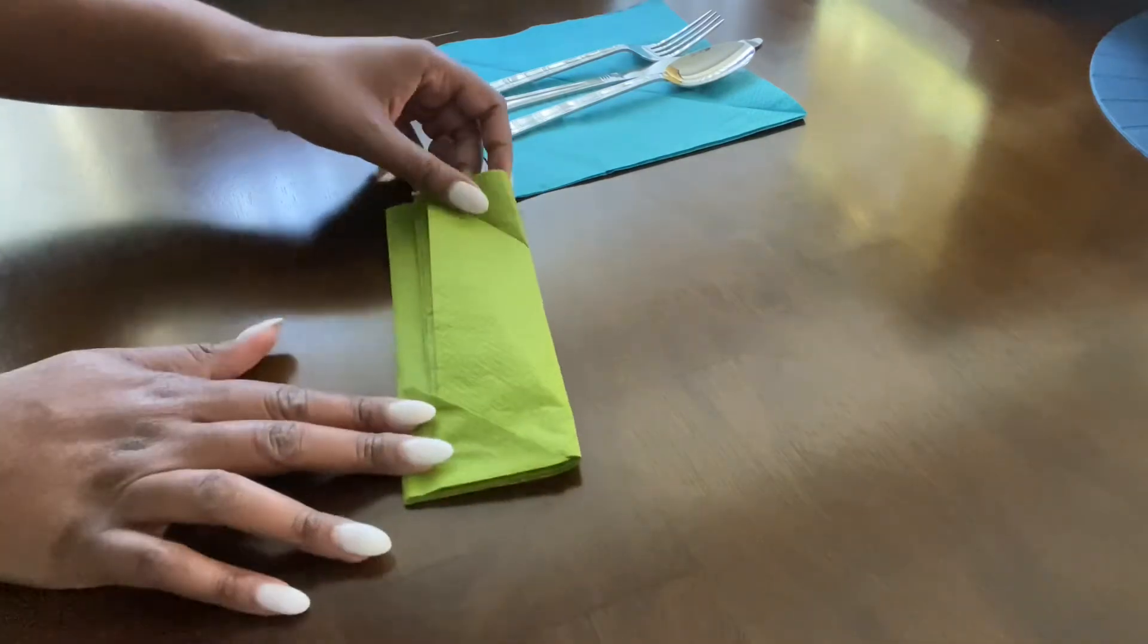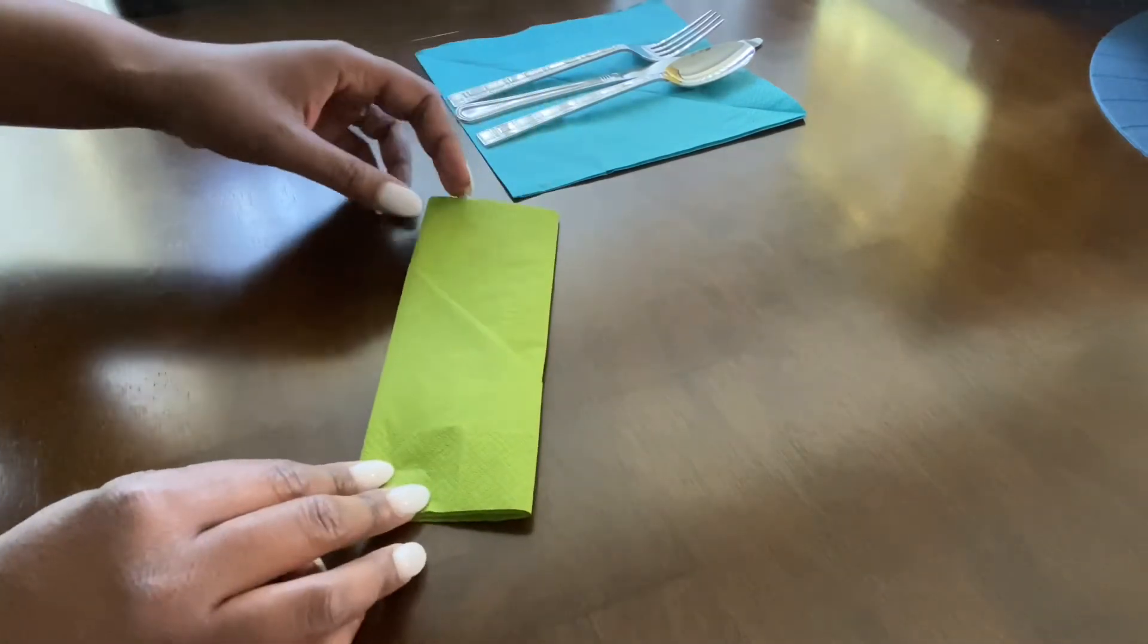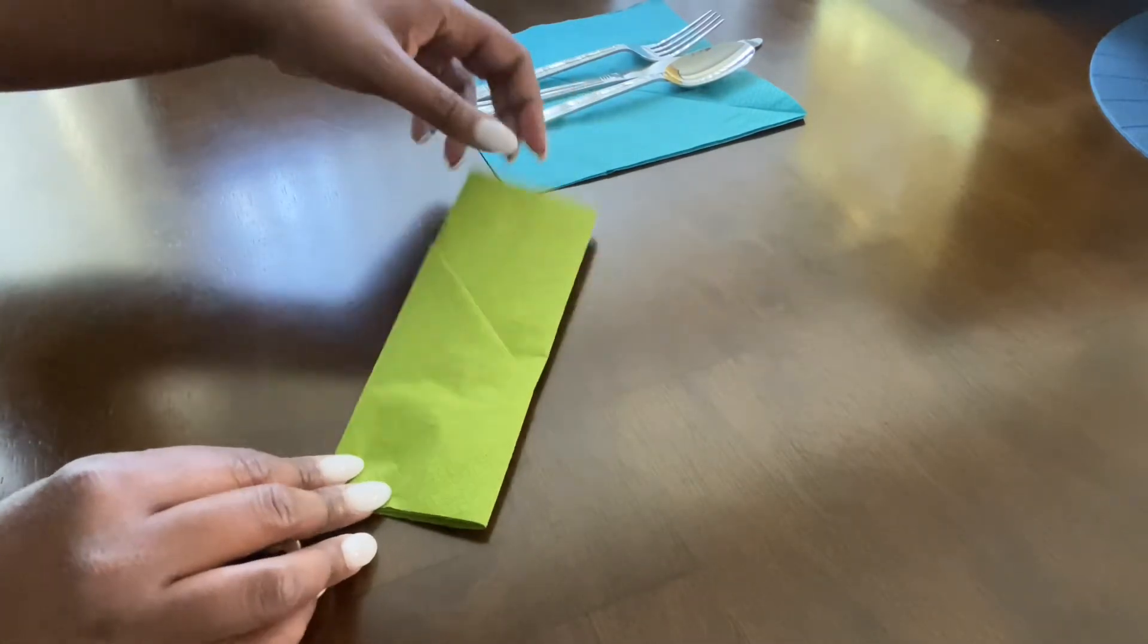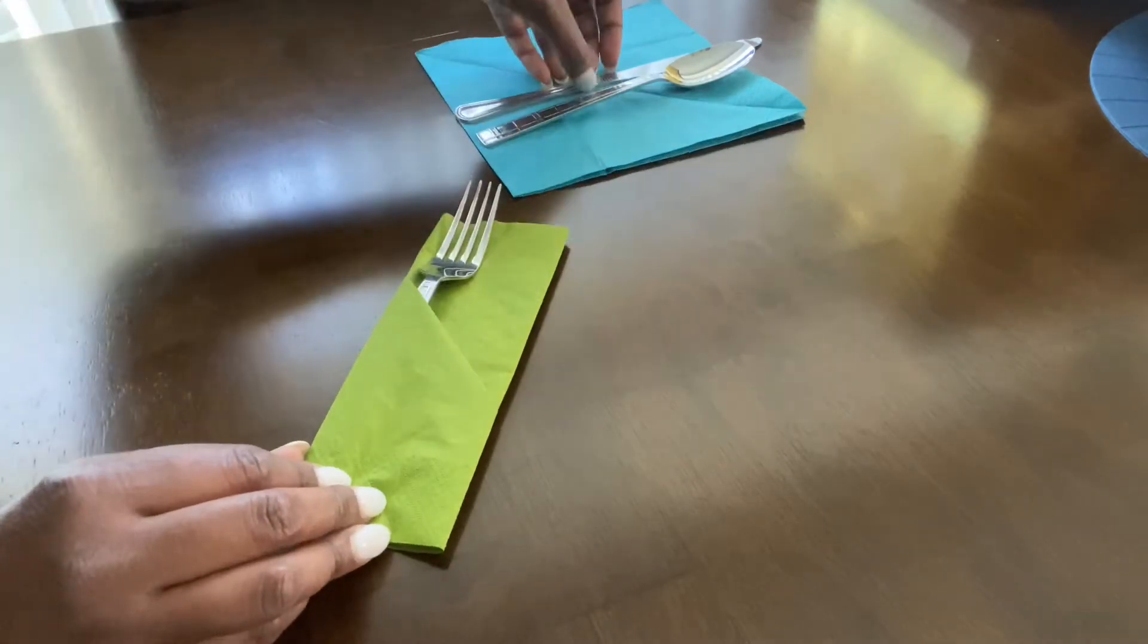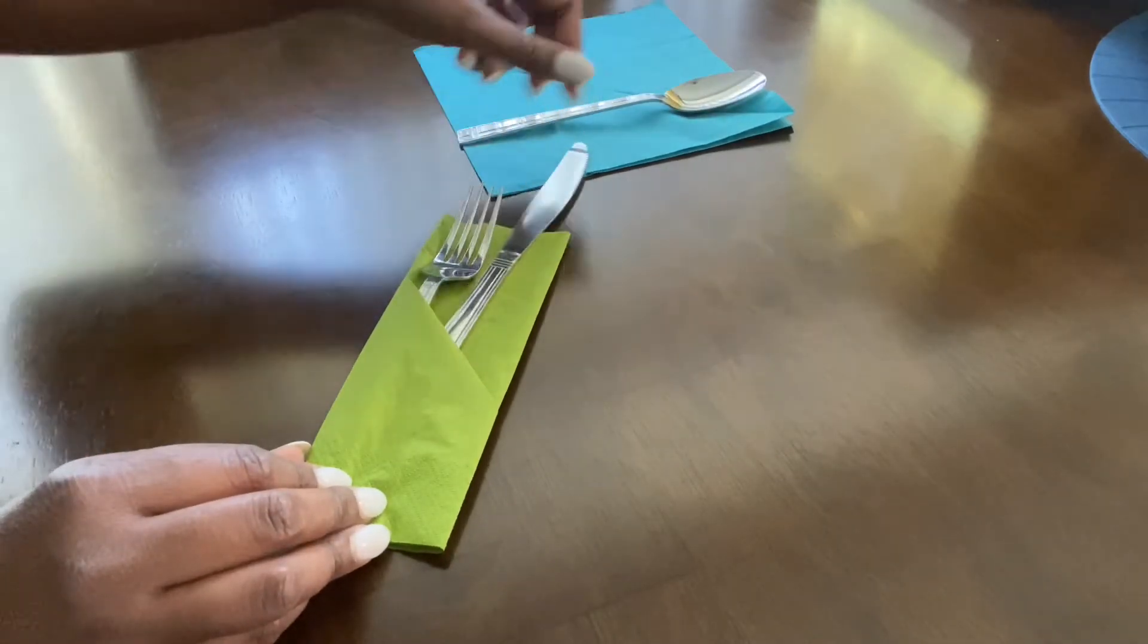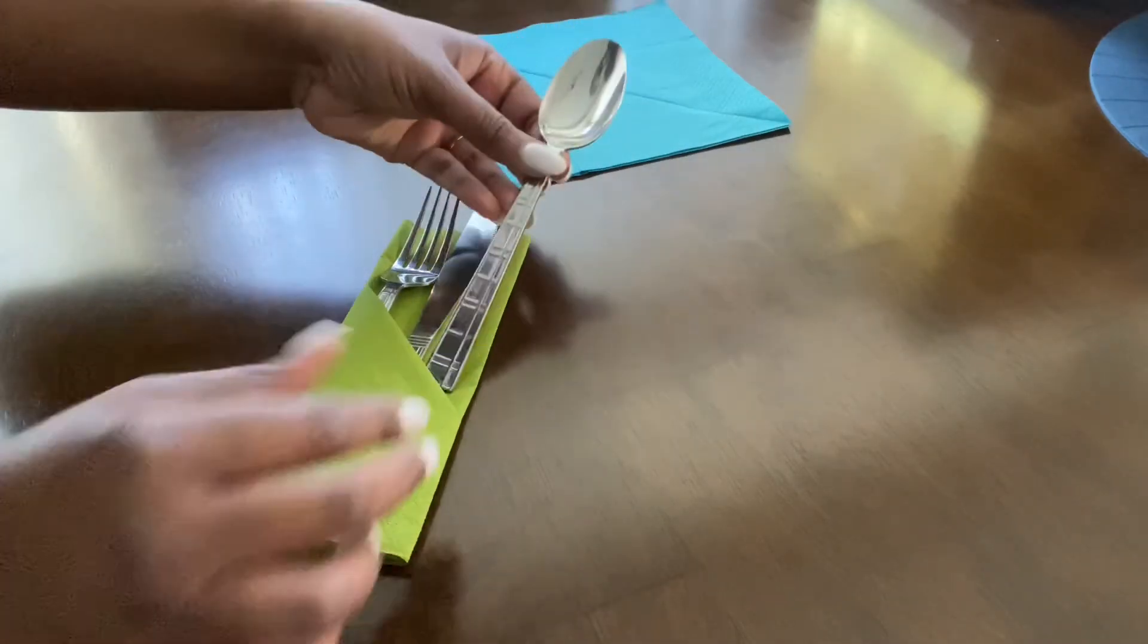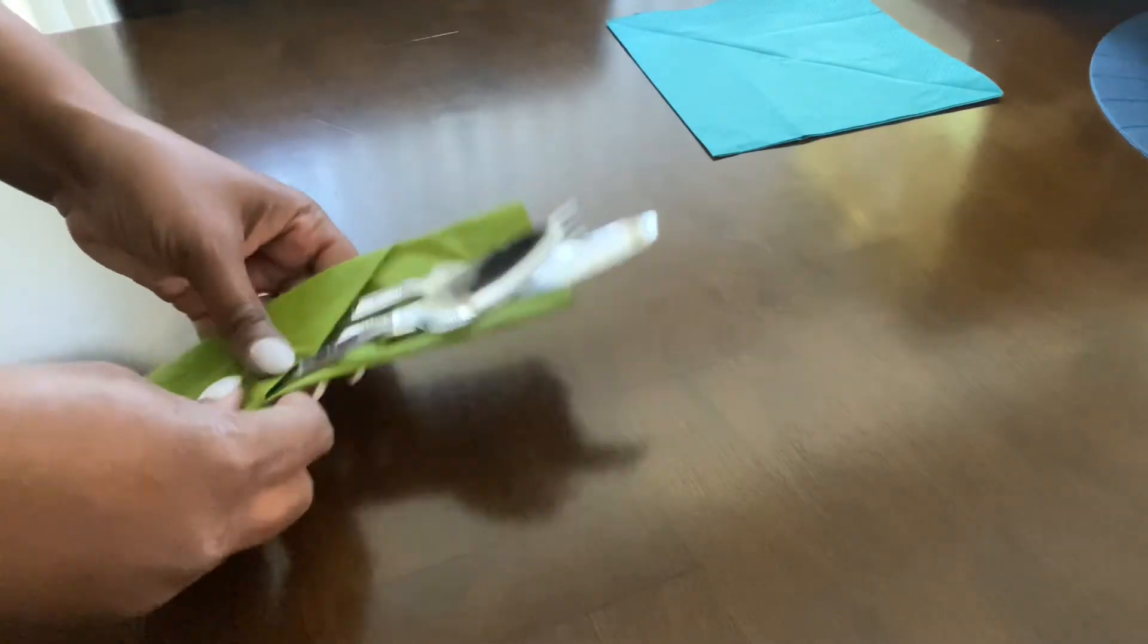Okay, so it should look like this with a little pocket. Then we're going to flip it back over and then we've created a larger pocket on that side. Then we're going to take our silverware and we're going to put it in there just like that. There you have it - nice and ready to go.